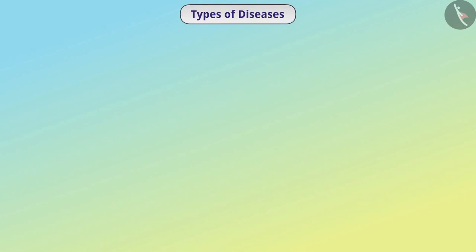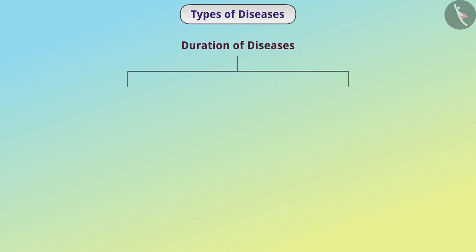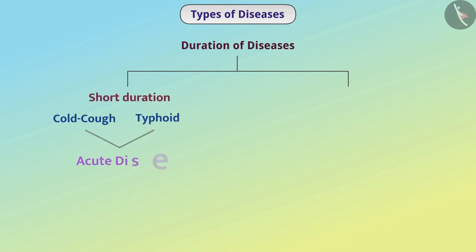We can divide diseases into different groups. One way is to classify different diseases on the basis of duration. Some diseases like cold, cough, and typhoid occur suddenly and are of short duration. Such diseases are called acute diseases.